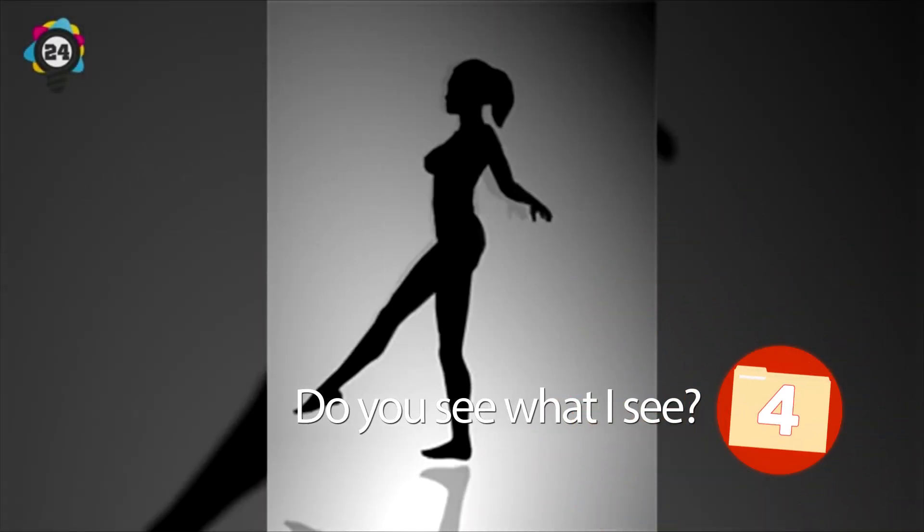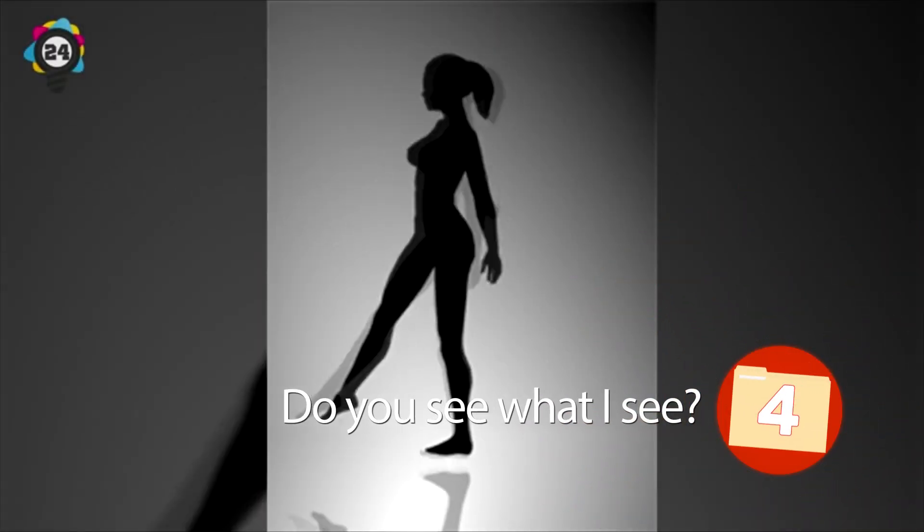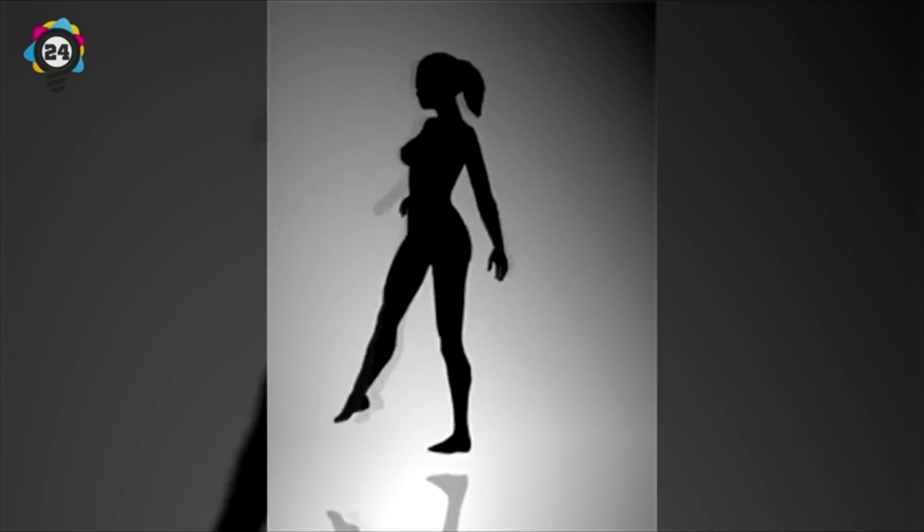Number 4: Do You See What I See? As powerful and essential as our brain may be, it's still far from being infallible. Take for instance, visual and optical illusions. These go to show that our minds tend to make speculations and assumptions about what is